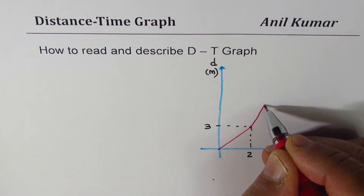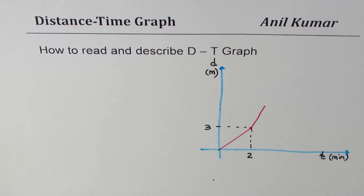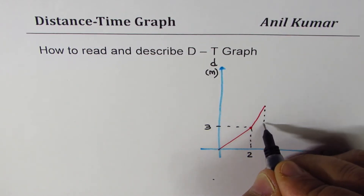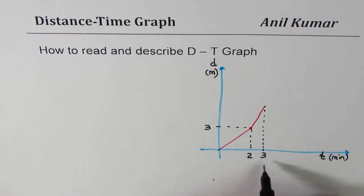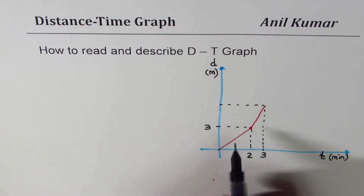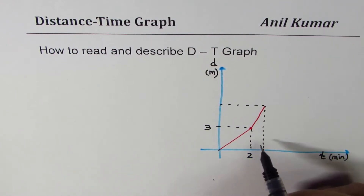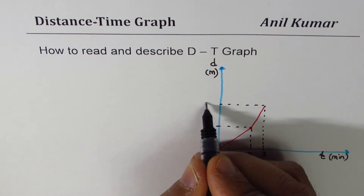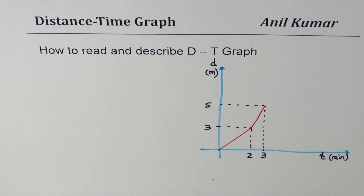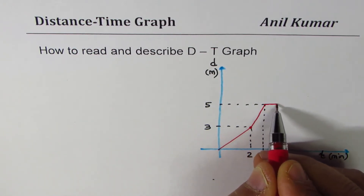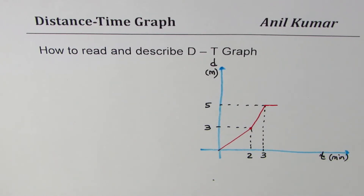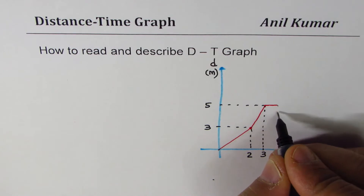Now Peter starts walking faster, which means in the next interval the distance covered increases. At three minutes, let's say the distance covered is five meters. That's a change of two meters in one minute, and that's how we describe it on the graph.